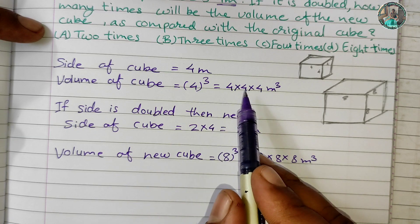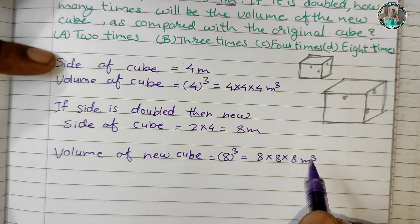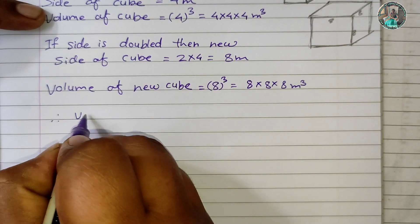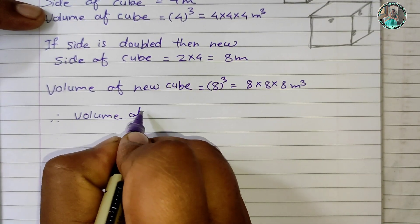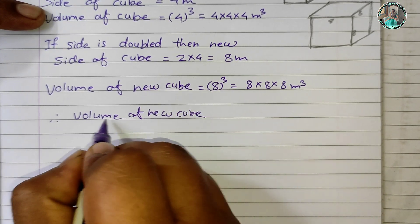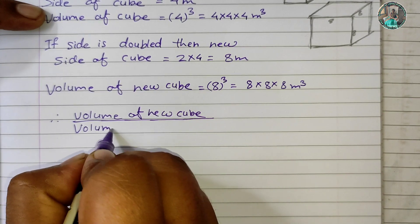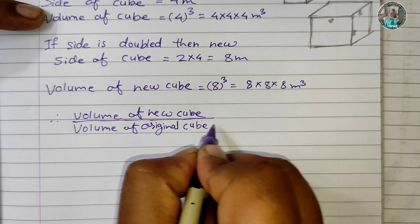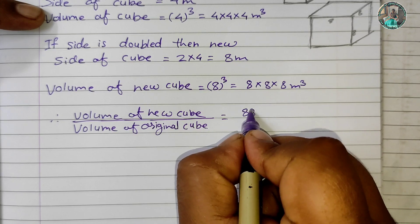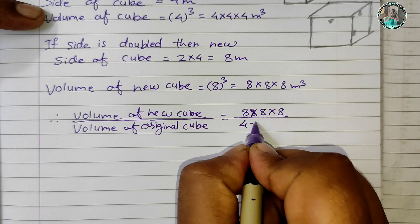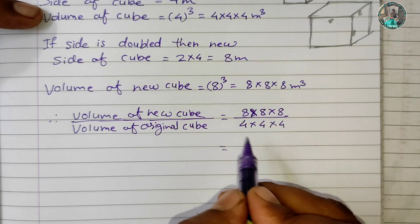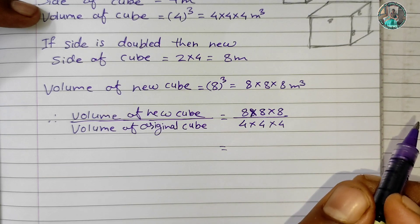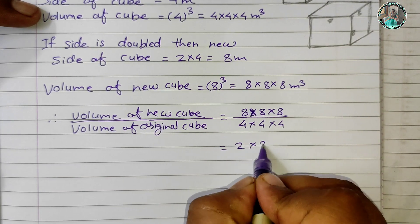4-side volume = 4 × 4 × 4; 8-side volume = 8 × 8 × 8. For the comparison: volume of new cube divided by volume of original cube = (8 × 8 × 8) / (4 × 4 × 4). Simplifying: 2 × 2 × 2 = 8.